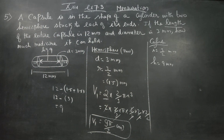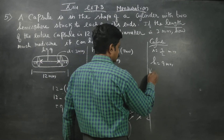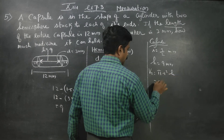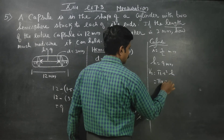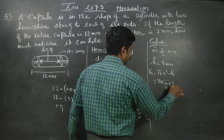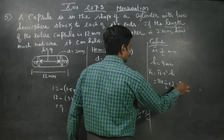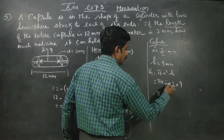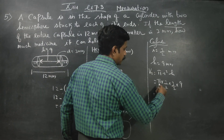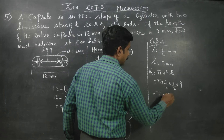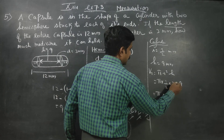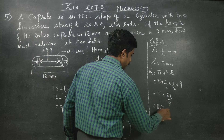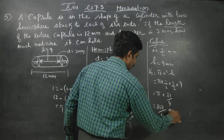Now we find the volume of the cylinder, V2 = π r² h. Substituting r = 3/2 and h = 9: π into (3/2)² into 9 = 81π/4 mm³.